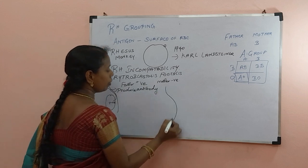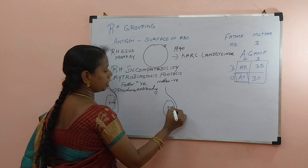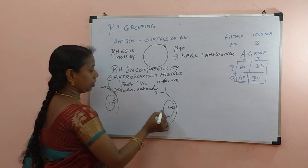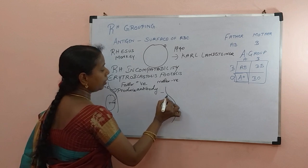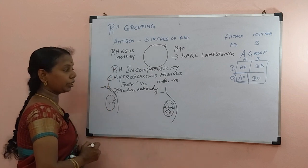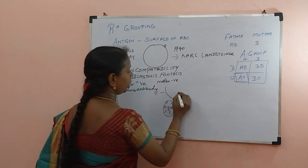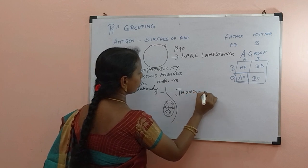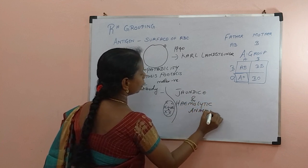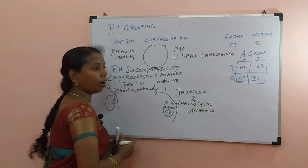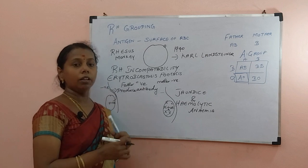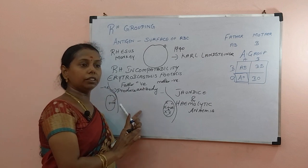Now assume the same mother conceives a second time and the child formed is again positive. The mother is negative, but she has already produced the antibody. Now the encounter will be very fast — the antibodies will attack the child, and the child will be terminated or aborted. The child's death is mainly due to jaundice and hemolytic anemia. Hemo means blood, lytic means killing — the count of RBC will get reduced. Nowadays, anti-D dosage is given to the negative mother immediately after the first delivery.